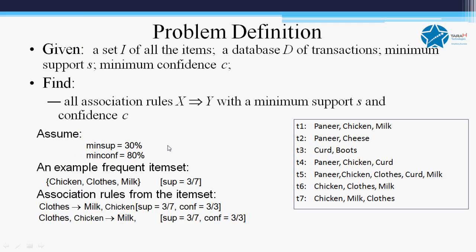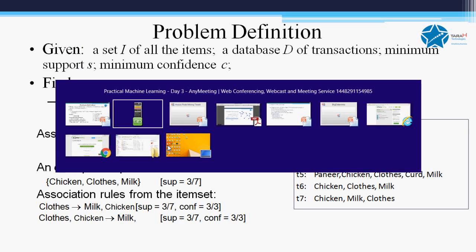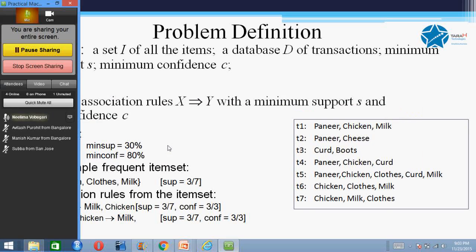Look at the example here. We assume minimum support is 30% and minimum confidence is 80%. In this transaction database, T2 contains paneer and cheese; T4 contains paneer, chicken, and curd; T5 contains paneer, chicken, clothes, curd, and milk; T6 contains chicken, clothes, and milk; T7 contains chicken and clothes.